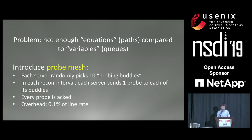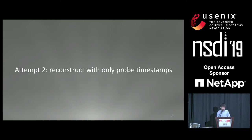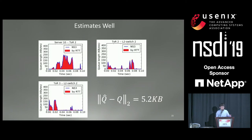We therefore introduced a probe mesh. In the probe mesh, each server randomly picks 10 probing buddies, and in each reconstruction interval each server sends one probe to each of its buddies. Every probe is small, and the probing overhead is roughly 0.1% of the line rate. By using this probe mesh, we can use a small number of packets to create dense coverage of paths in the network. Our second attempt reconstructs queue sizes using only probe timestamps. The reconstruction matches ground truth pretty well, with an average reconstruction error of 5.2 kilobytes — roughly three to four MTU-sized packets.